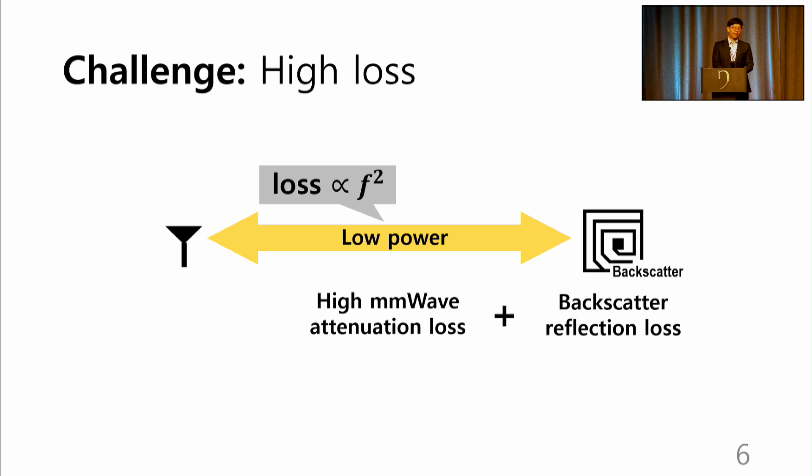However, millimeter wave has its problems. Our critical problem is that the high attenuation of millimeter wave, along with the backscatter reflection loss, together they make millimeter wave backscatter very fragile. This severely undermines the practical deployment of the tags.